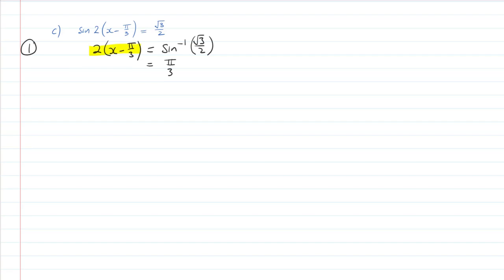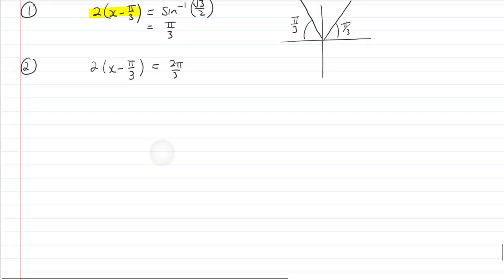Before we do any rearranging of this internal bit here, we have to recognize that we're currently dealing with a 2π unit circle. As soon as I divide by 2 there, I'm not dealing with that 2π unit circle anymore. My period changes. The easiest thing to do is find our second solution using a unit circle before we solve the equation. We've got π/3 here, and sine is also positive in the second quadrant. That's π/3, which means our second solution is 2x - π/3 equals 2π/3, or π minus π/3. Those are our two solutions.